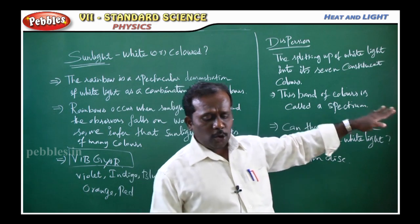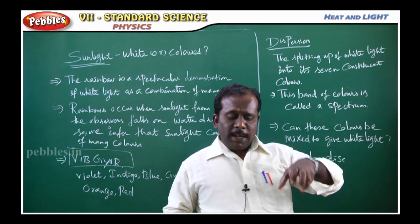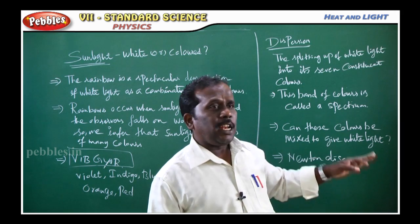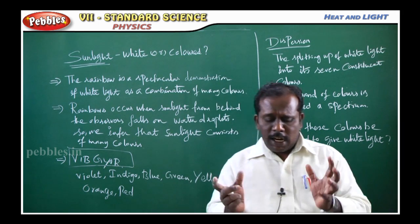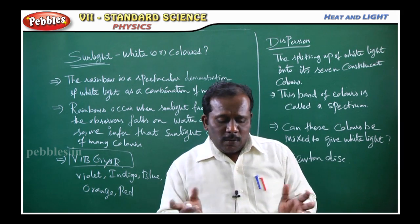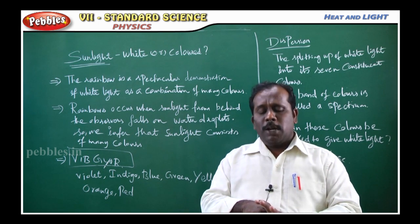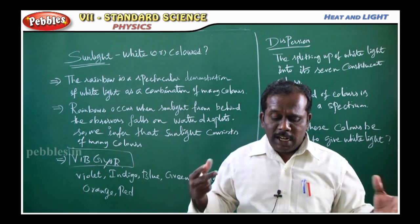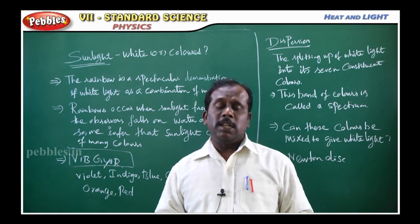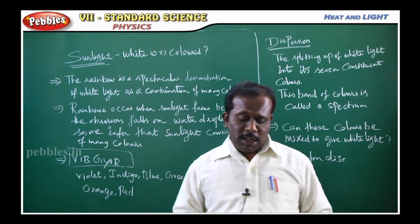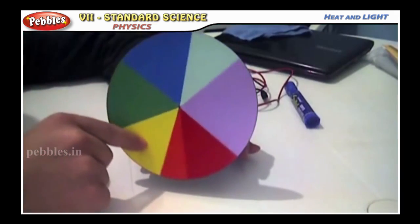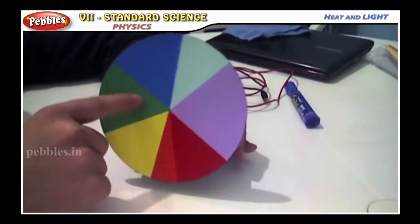This band of colors is called the spectrum. Can these 7 colors mix to give white light? We will talk about this using the Newton disc. A circular disc is painted with the 7 colors of the spectrum.